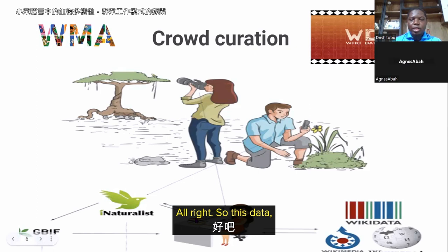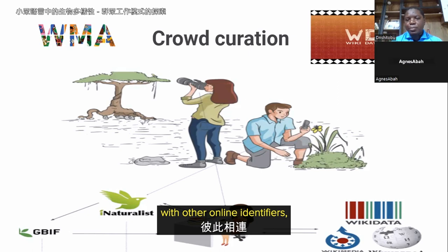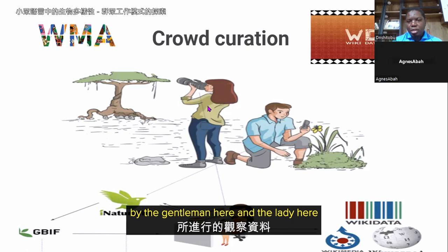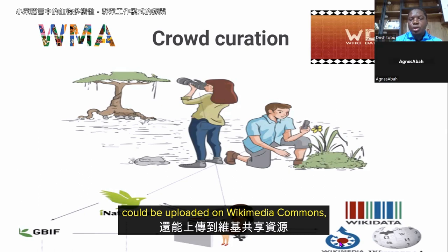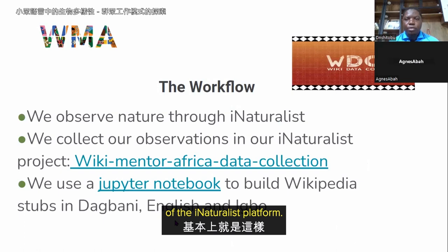Once this data is integrated with the GBIF and connected with other online identifiers, we can create a Wikipedia article for it, linked to its Wikidata item. The images taken by observers can be uploaded to Wikimedia Commons and further linked to either the Wikidata item or the Wikipedia article. That is basically the general workflow of the iNaturalist platform.